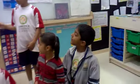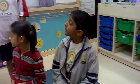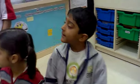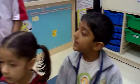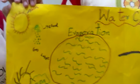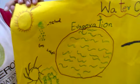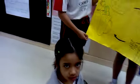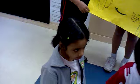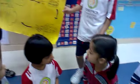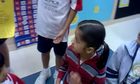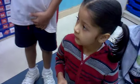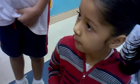The water cycle starts with evaporation. The sun heats the water in the lake, and that is called evaporation. The water vapour comes up.